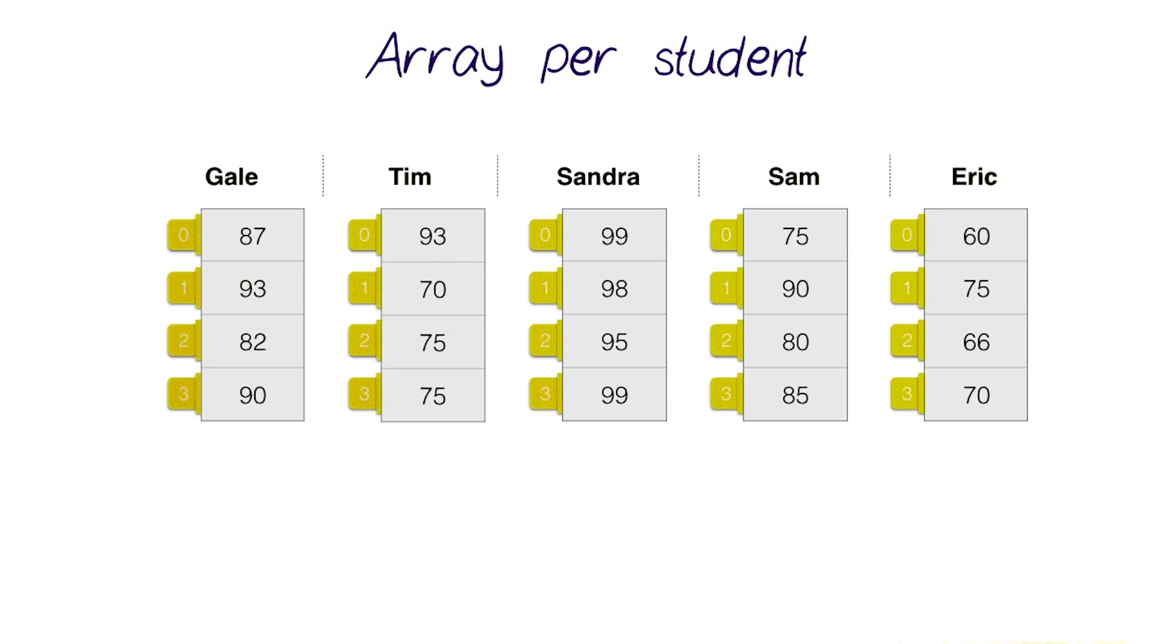But say we wanted to calculate the average per subject to see how students are performing in biology, for example. We'd need to access one individual item in all of these arrays, and loops won't be able to help us with that.